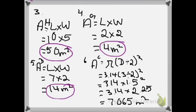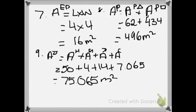For the driveway, it will be length times width since it's a rectangle: 7 times 2 gives us 14 meters squared. For the circular fountain, it's pi times diameter divided by 2, squared. So 3.14 times (3 divided by 2) squared equals 3.14 times 1.5 squared, equals 3.14 times 2.25, giving us 7.065 meters squared. For the extra patio, length times width: 4 times 4 gives us 16 meters squared.